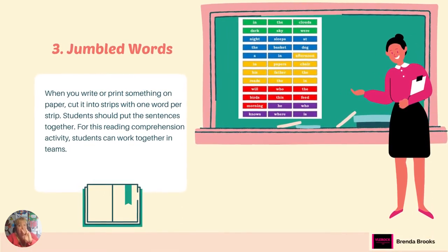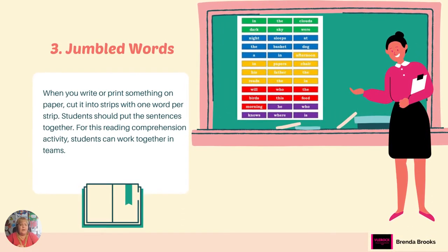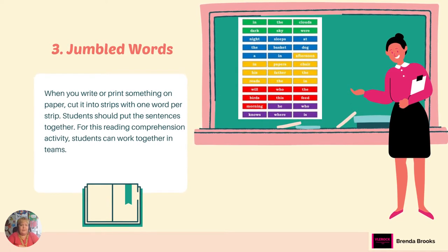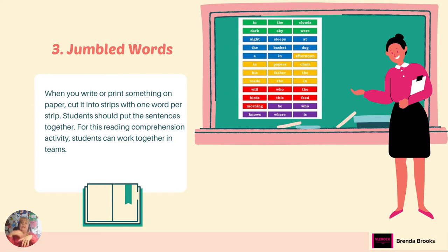Number three: jumbled words. When you write or print something on paper, cut it into strips with one word per strip. The students then take the words and rearrange them to create a sentence, then read the sentence aloud. As you can see through the sample on the board, they are color-coded so each sentence group is color-coded so the students know which words belong together.